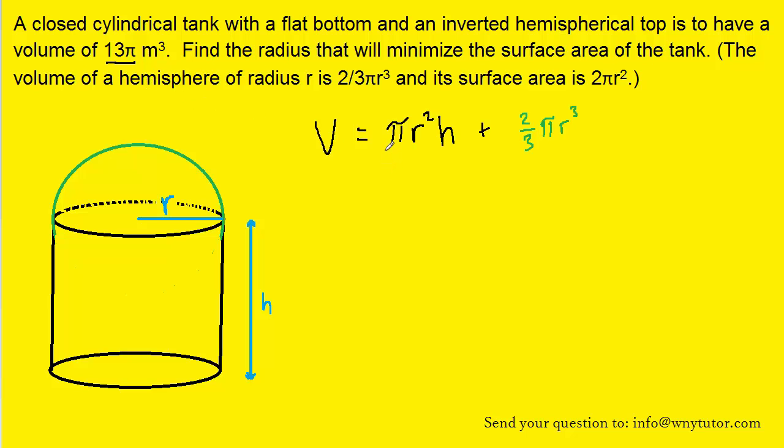So the volume equation will contain the sum of two terms. First, we have the volume of the cylindrical portion of the tank, and then we also have the volume of the hemisphere that is sitting on top of the tank. The question noted that the equation for the volume of a hemisphere is (2/3)πr³, so we've used that in our total volume equation.